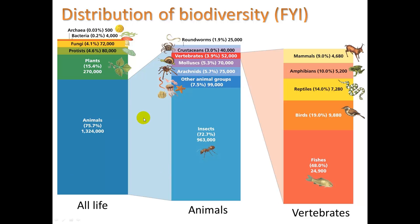Here's a graphic of all life: 75% of known species are animals, 15% are plants, then 5% protists, 4% fungi, bacteria, and archaea. Within the animals, the breakdown is mostly known insect species, with vertebrates representing a very small percentage. Of all vertebrates, the groups are fishes, birds, reptiles, amphibians, and mammals.